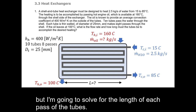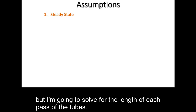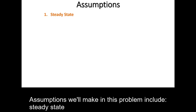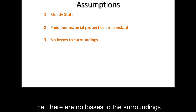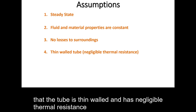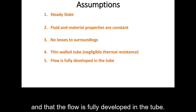I'm going to solve for the length of each pass of the tubes. Assumptions include steady state, constant fluid and material properties, no losses to the surroundings, a thin-walled tube with negligible thermal resistance, and fully developed flow in the tube.